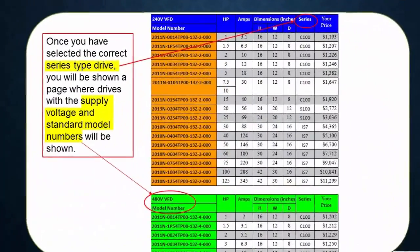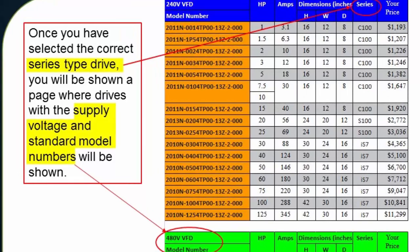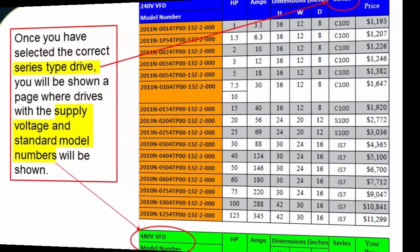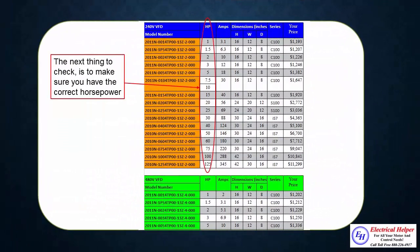Once you have selected the correct series type for your drive and selected the proper voltage, the different standard model numbers will be displayed for you to select from. The next thing you will want to check is to make sure that you have the correct horsepower selected.